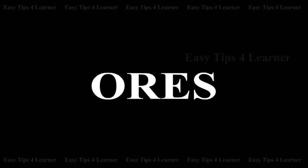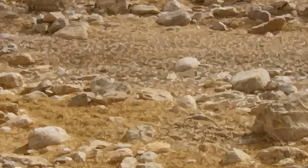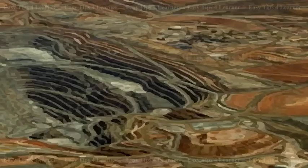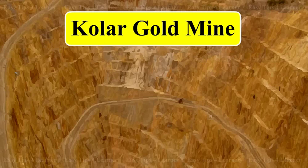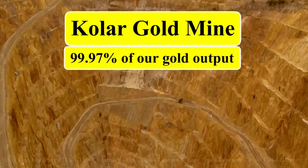The important ore of gold is alluvial sand or gravel. Nearly half of the total world production of gold comes from the mines in South Africa. India occupies the eighth position among gold-producing countries, accounting for about 2% of total gold production. The Kolar mines in Karnataka produce about 99.97% of India's gold output.